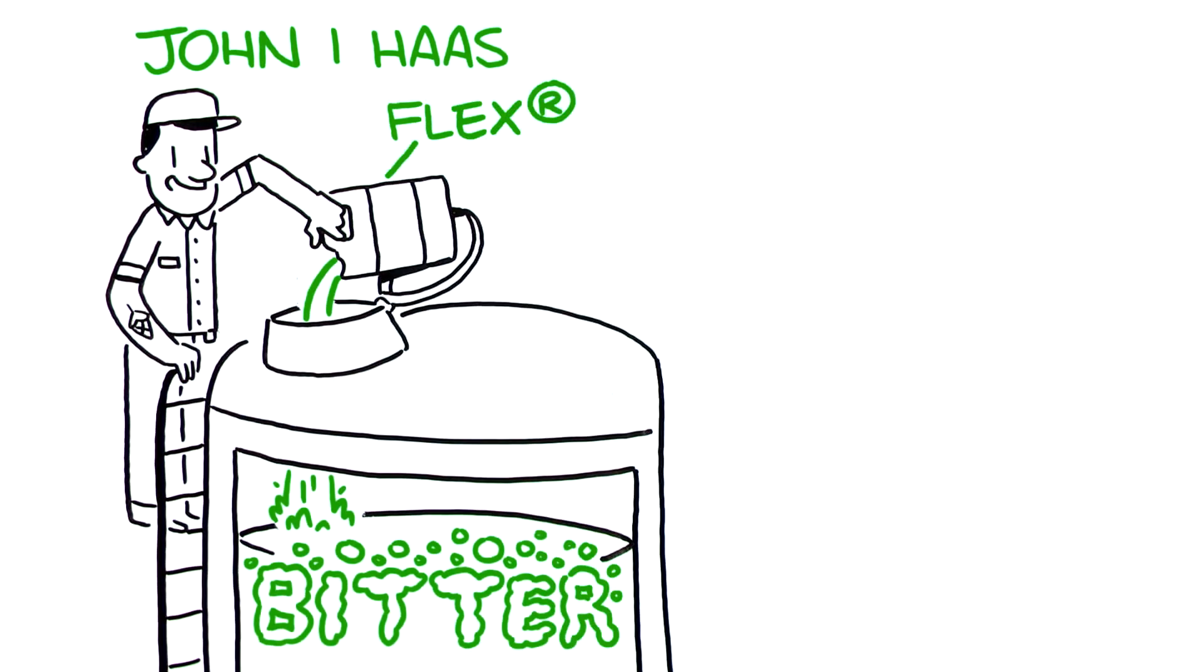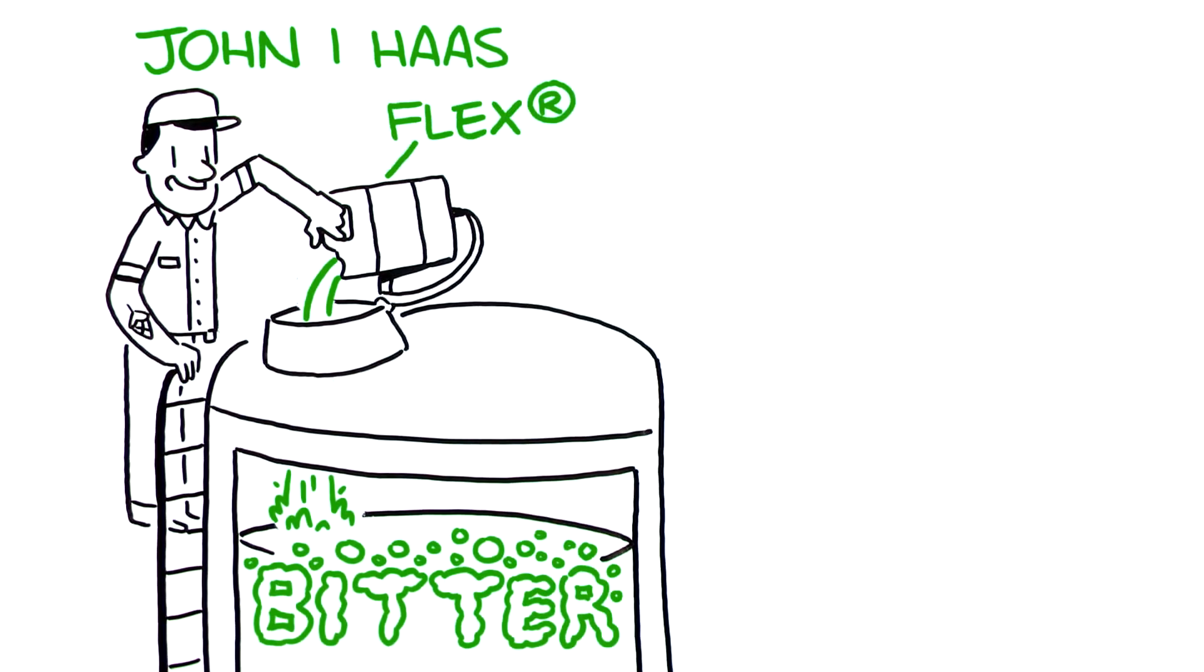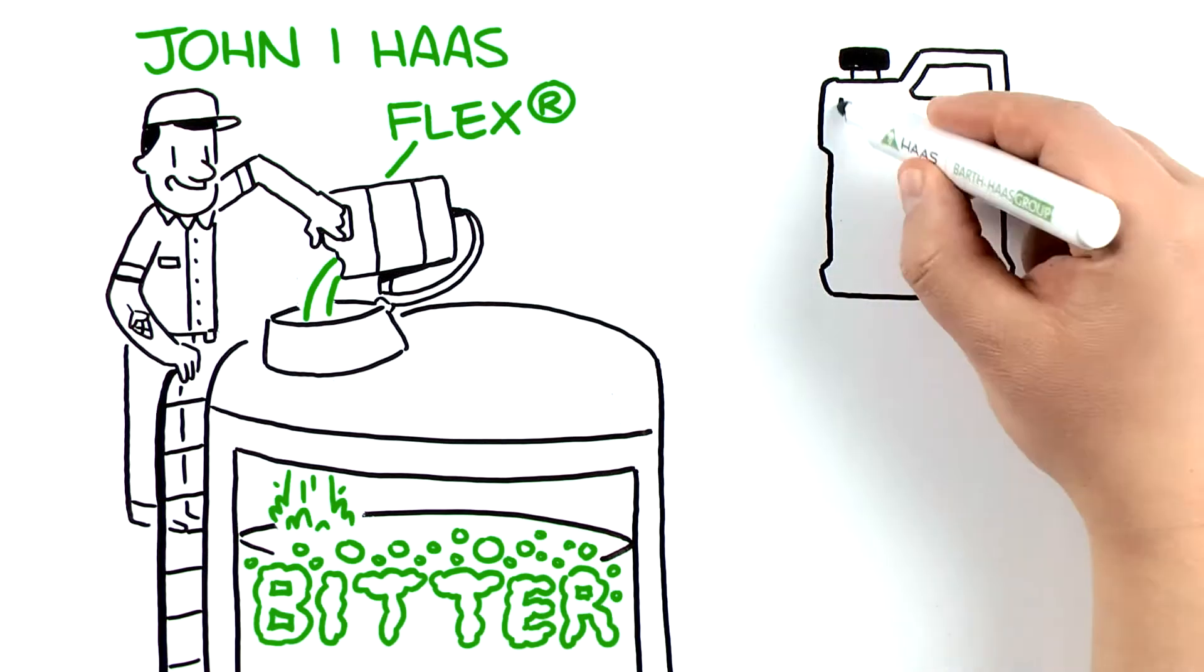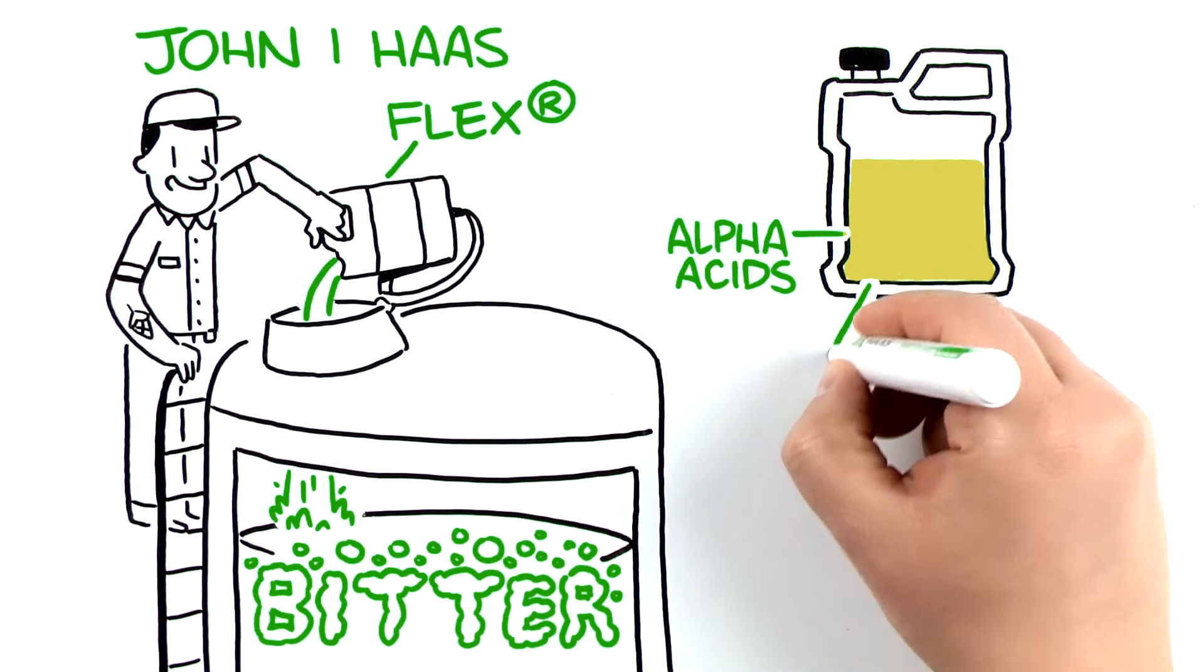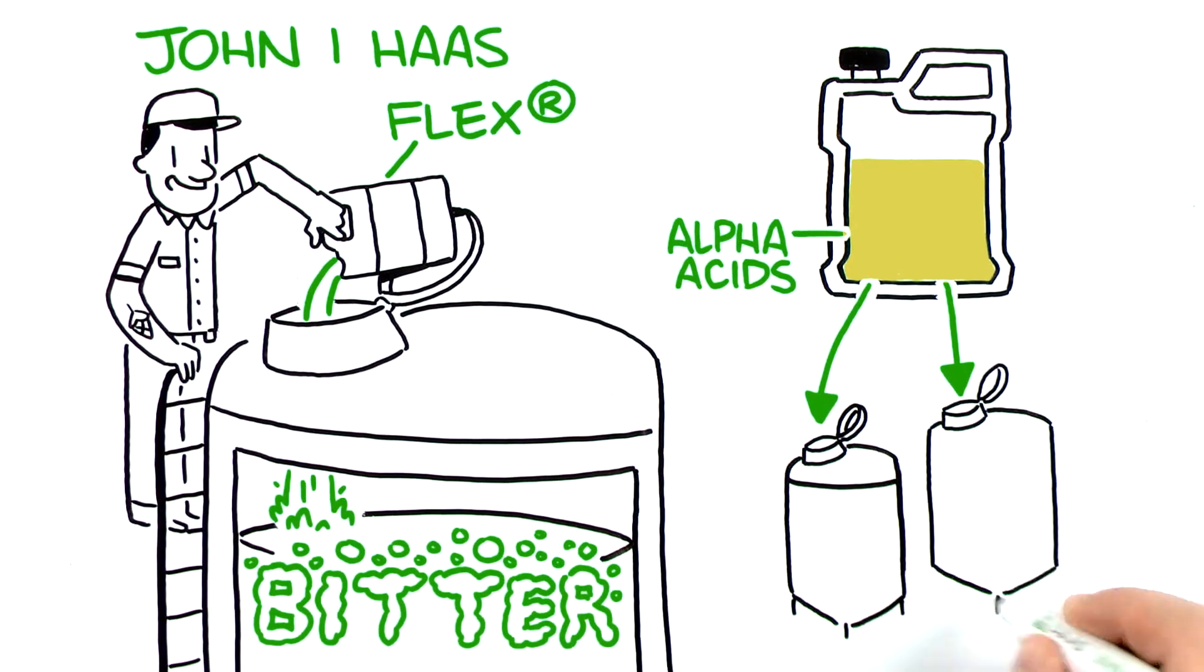The result is FLEX, an all-natural solution for your bittering needs. You can count on FLEX having the same level of alpha acids in every jug, which makes batch-to-batch dosing rate calculations easy.